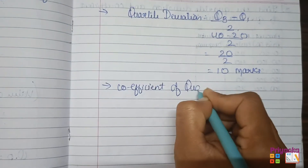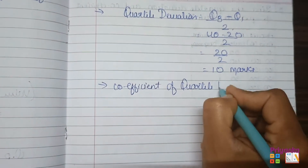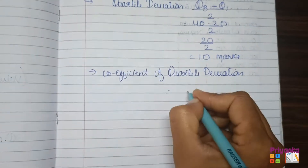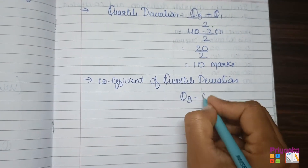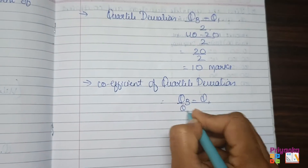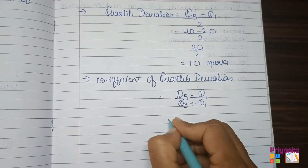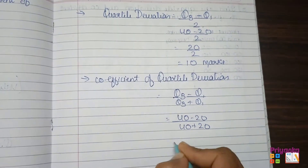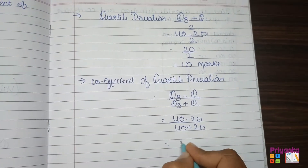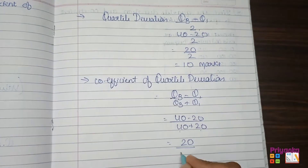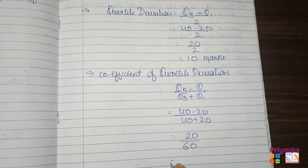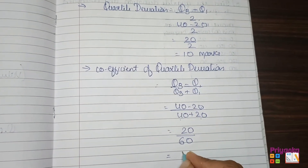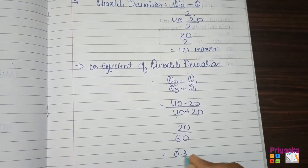Next, the coefficient of quartile deviation: (Q3 − Q1)/(Q3 + Q1) = (40 − 20)/(40 + 20) = 20/60 = 0.33. That completes the second question.